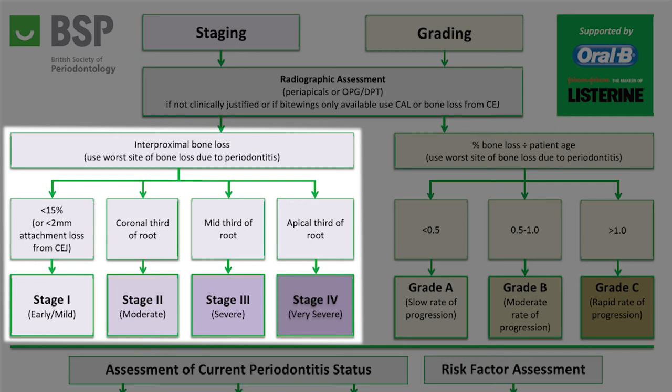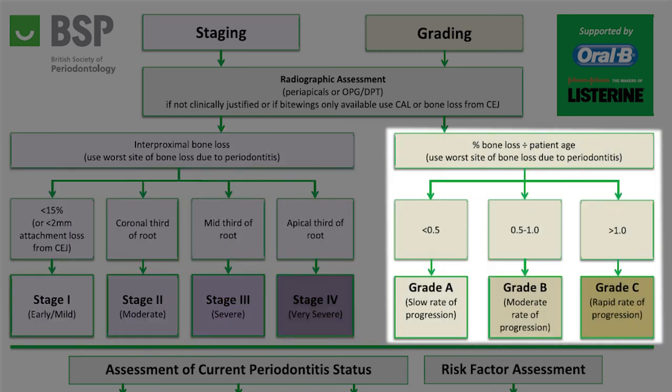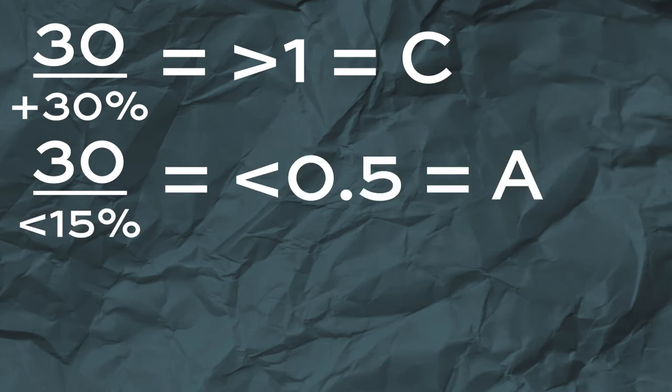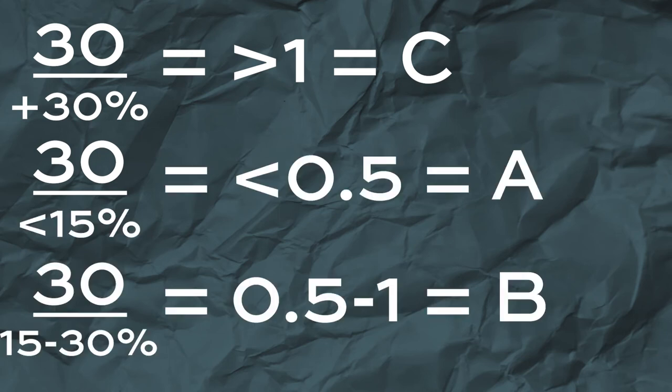To classify the stage and grade, you need the radiograph taken at the first appointment. Staging refers to the severity of the disease and is calculated using the worst site of bone loss. Grading refers to the rate at which the disease is progressing, calculated using the percentage of bone loss and the patient's age. You don't need a calculator — it's simple maths: if the patient is 30 and has more than 30% bone loss, the ratio is more than one, which is Grade C. If that same 30-year-old had 15% bone loss, that would be Grade A, and anything in between would be Grade B.